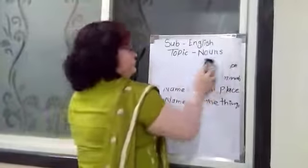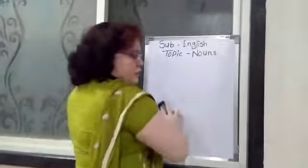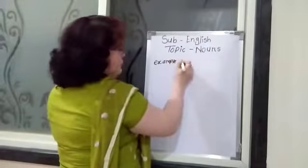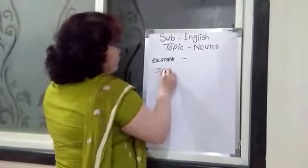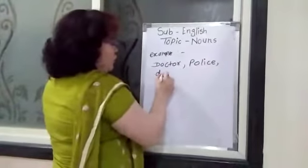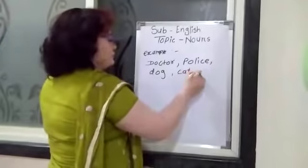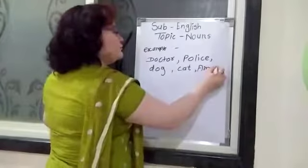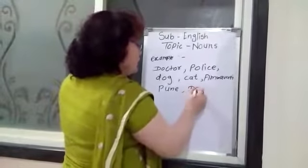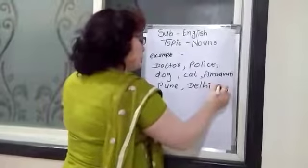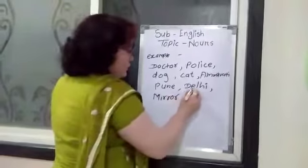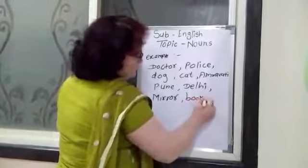Now I am going to show some examples: Doctor, Police, Dog, Cat, Amravati, Pune, Delhi. And also mirror, book, and pen.